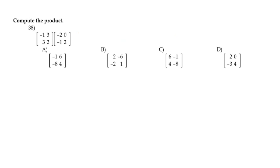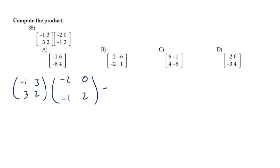I have a 2×2 matrix multiplied by another 2×2 matrix. As we know, if I multiply a 2×2 matrix by another 2×2 matrix, the answer is always another 2×2 matrix. I'm going to simplify — when you multiply matrices, you multiply row by column.